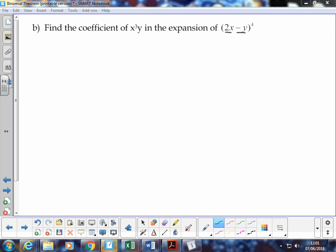So what we want to do is to think about what the general term or the r plus 1 term formula is again. So we've got n choose r times x to the power n minus r times y to the power r. And just like in every case, we can substitute in the particular values that we have for this problem.